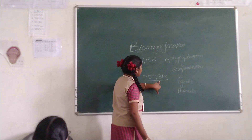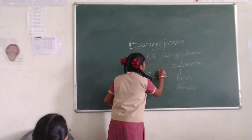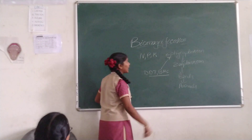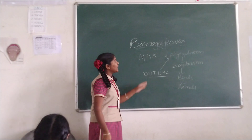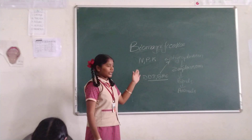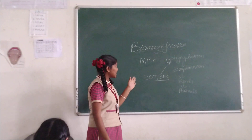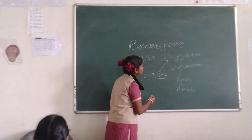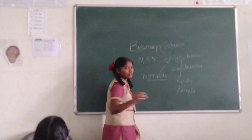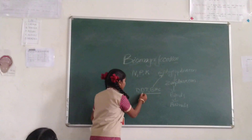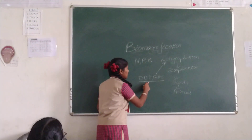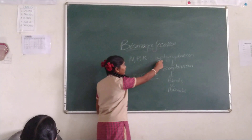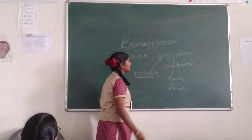So as the pesticides are entering into the body of phytoplankton, they accumulate — this is how pesticides are entering into the body of phytoplankton.